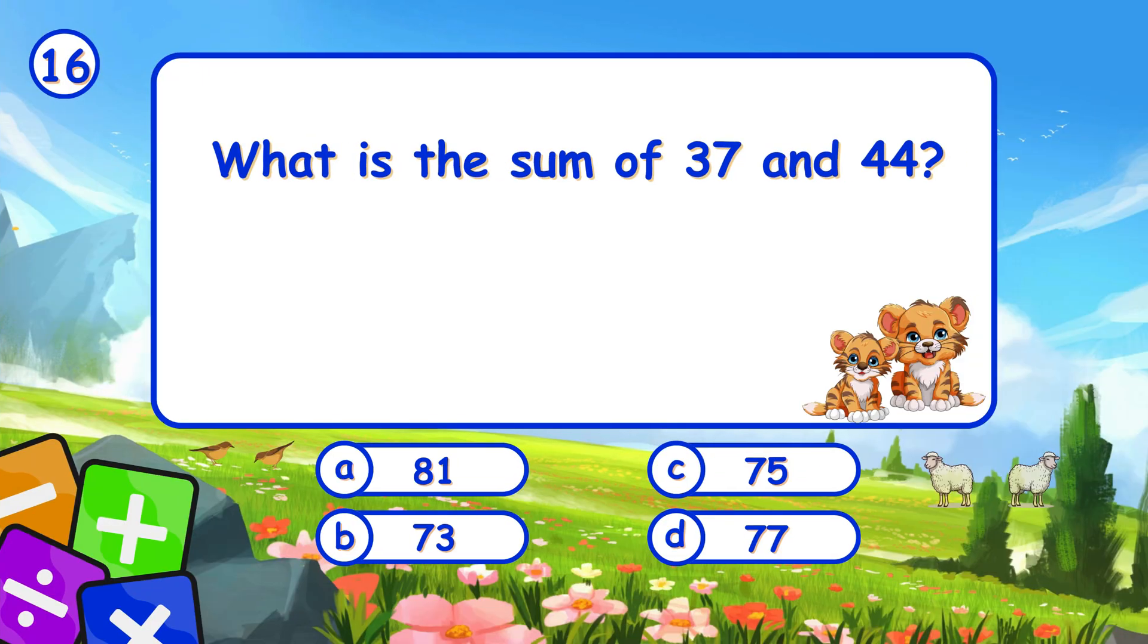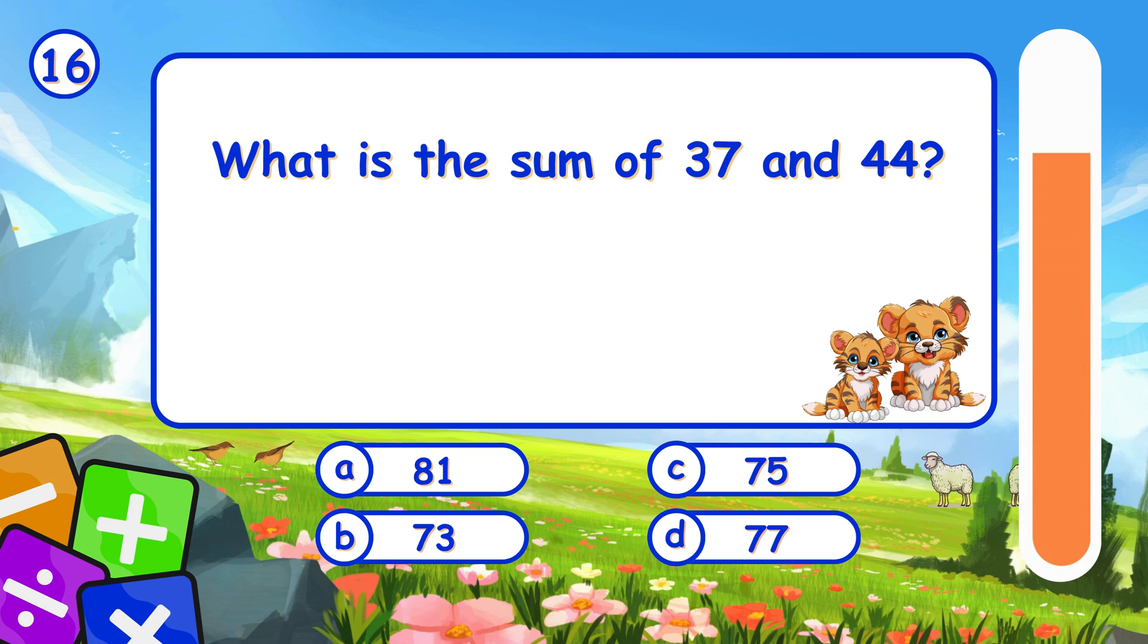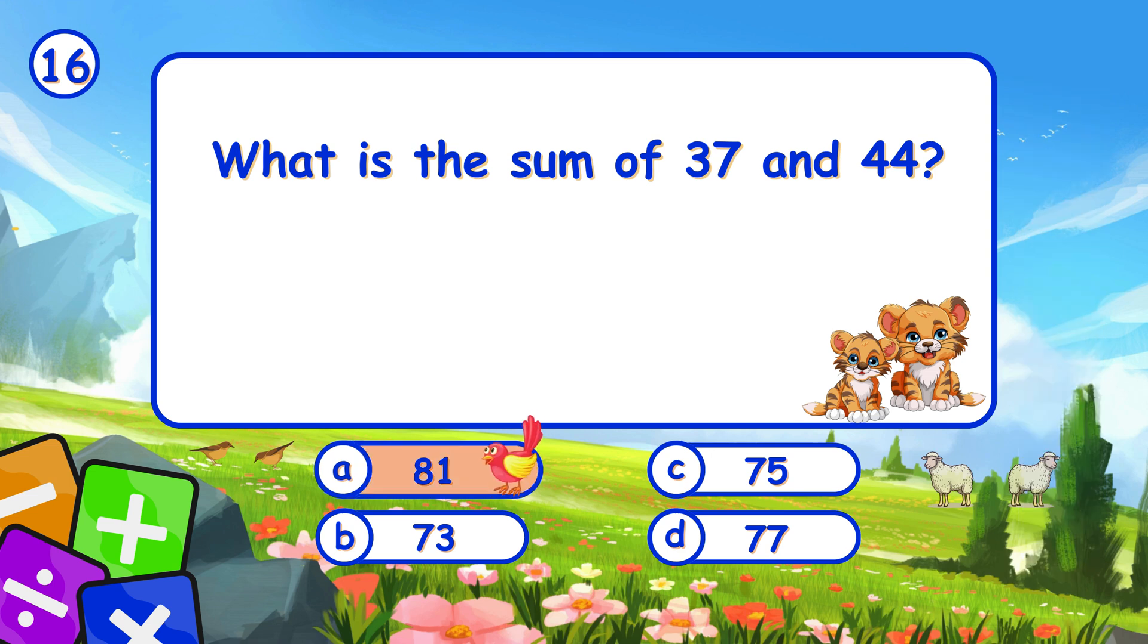What is the sum of 37 and 44? It's A, 81. Adding 37 and 44 gives 81.